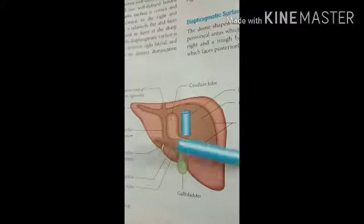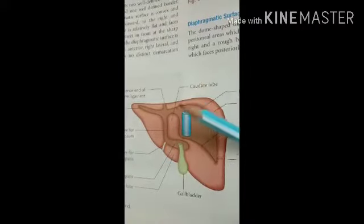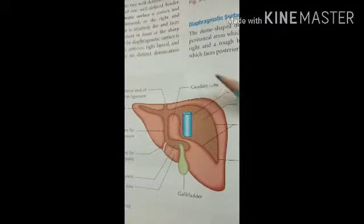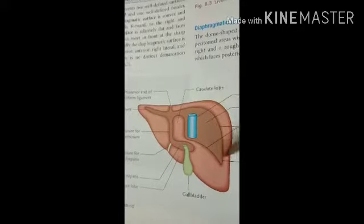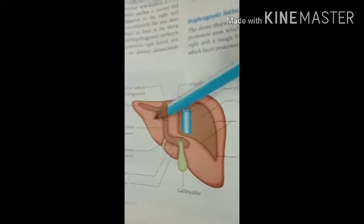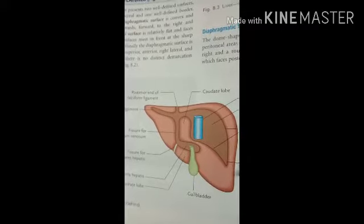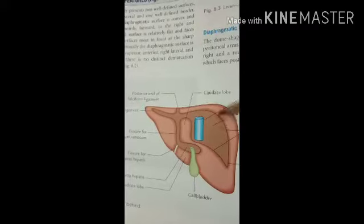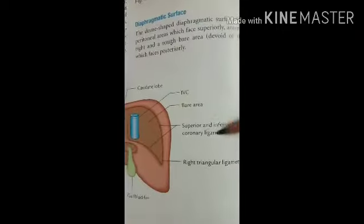The visceral surface is separated behind from the diaphragm by the posterior layer of the coronary ligament. You can see both sides of the coronary ligament — the superior coronary ligament and the inferior coronary ligament.